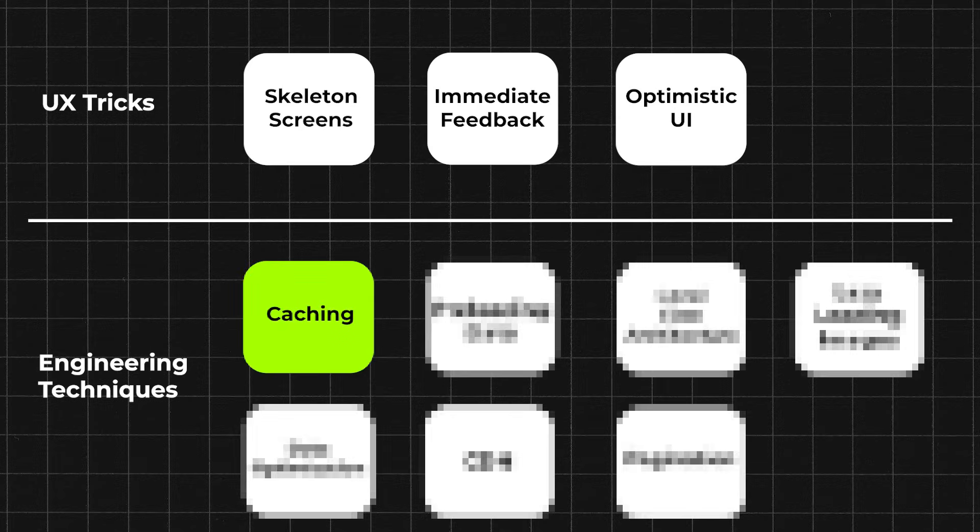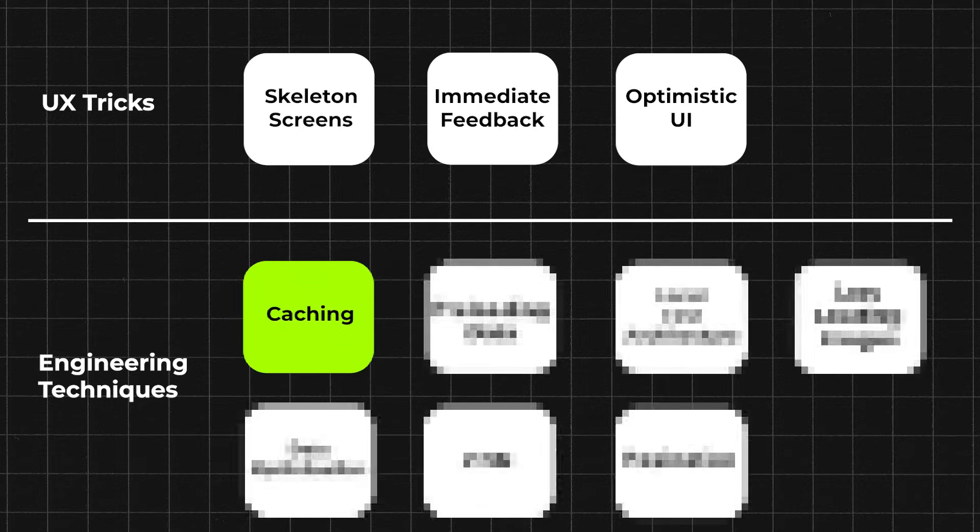Technique number one: caching. This is when frequently used data is stored temporarily on the device so it can be retrieved quickly. Caching has been used forever, is very simple to do in any app, and it just works. It works best when data does not change often. A powerful method is to show cached data immediately while loading fresh data in the background — this way the user never sees an empty screen.